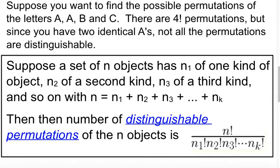The one other type of problem you may encounter is if you want to find the possible permutations. Let's say you want to find the possible permutations of the letters A, A, B, and C. So there's four letters there, so there's four factorial permutations. That's what we talked about on the other side of your notes. However, you have two identical A's.